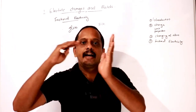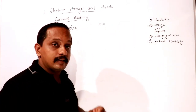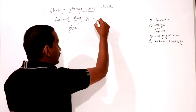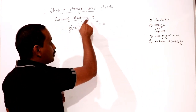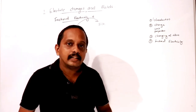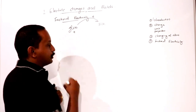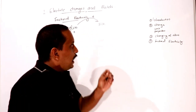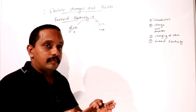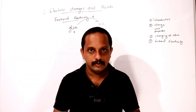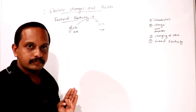When materials are rubbed, electrons transfer. For example, when glass is rubbed with silk, electrons move from the glass to the silk, making glass positively charged. The silk, which gains electrons, becomes negatively charged.